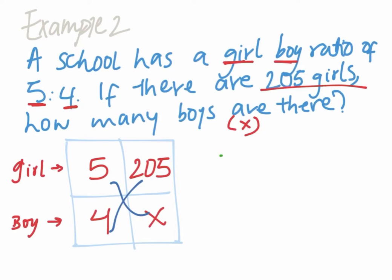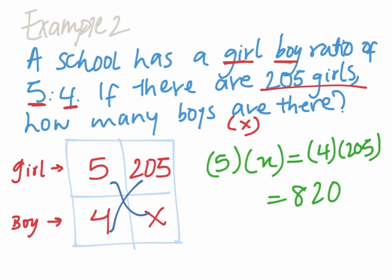So it goes five multiplied by X is equal to four multiplied by 205. So you multiply 205 by 4, which is 820, and then 5 comes to divide to give you your X, which is 164 boys.